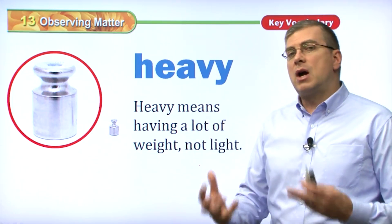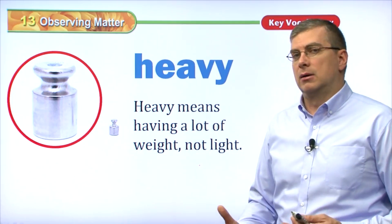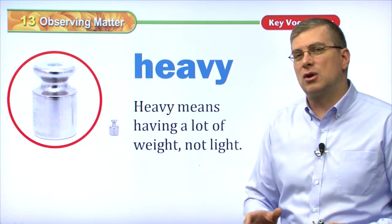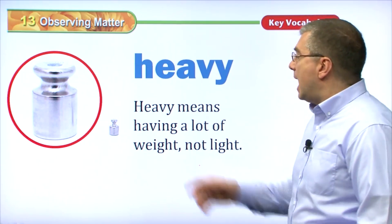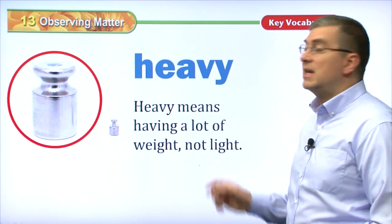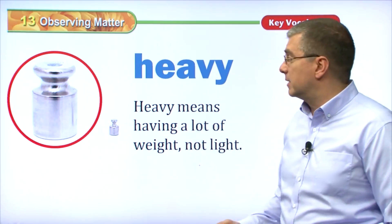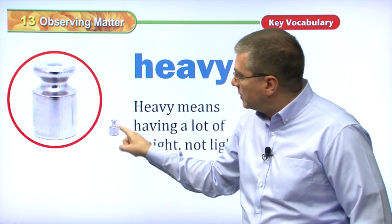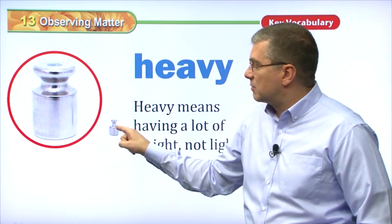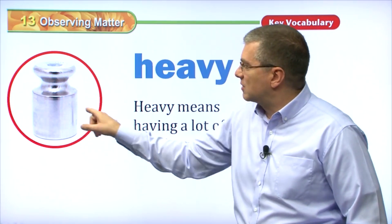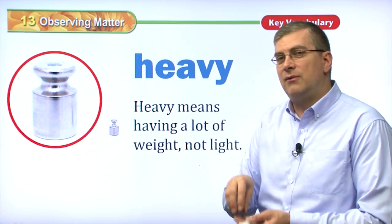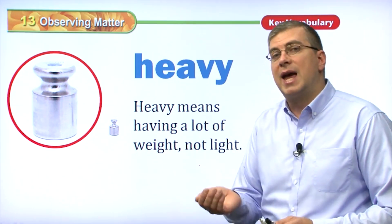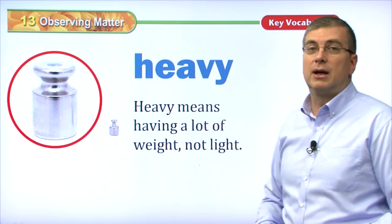Heavy. When we're talking about matter, we can describe matter — we can give adjectives to describe an interesting feature or characteristic of that matter. Heavy means having a lot of weight; it's the opposite of being light. This little weight here is made of metal. Even though it's small — it's magnified here — it weighs a lot because it's made of heavy metal. Metal, of course, weighs a lot. Even if it's small, it feels heavy, and that is the opposite of light.